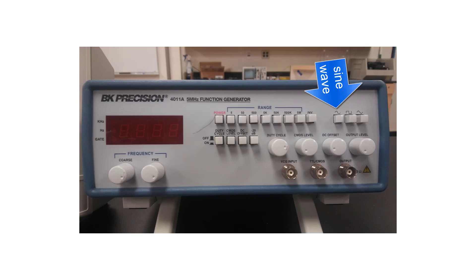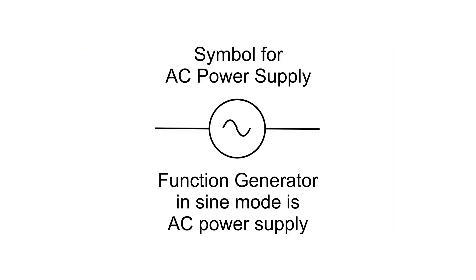The first button is a sine wave, also known as AC voltage. A function generator in sine mode acts as an AC power supply. This is the symbol for an AC power supply in a circuit diagram.